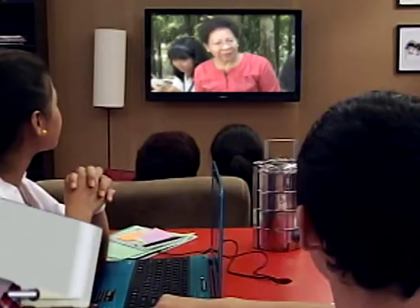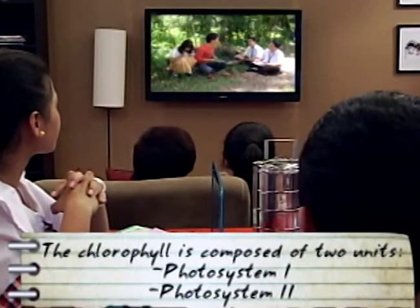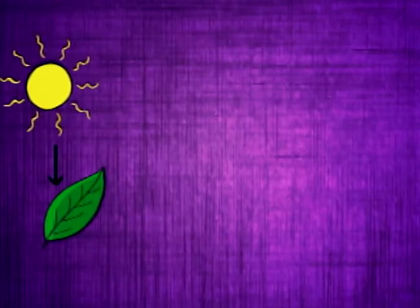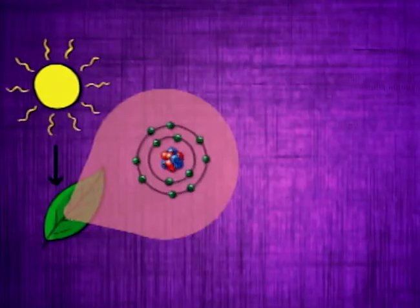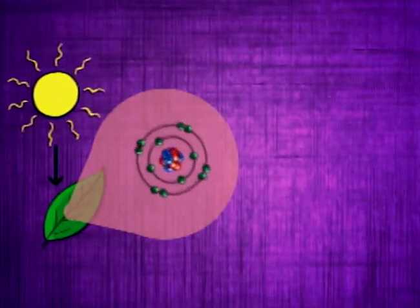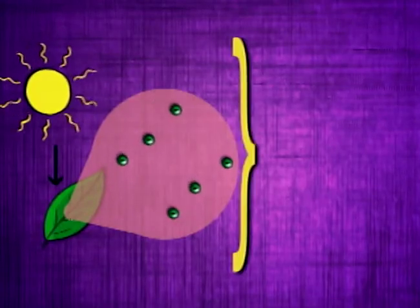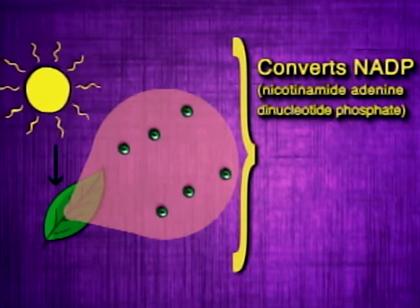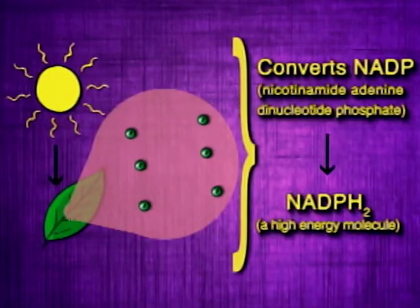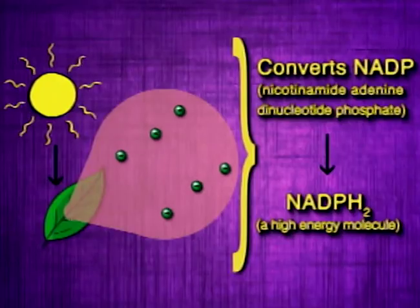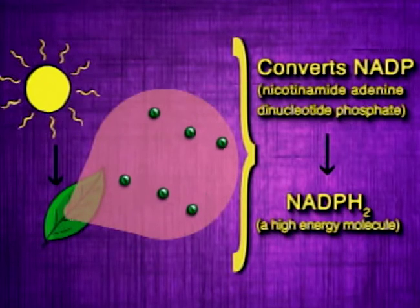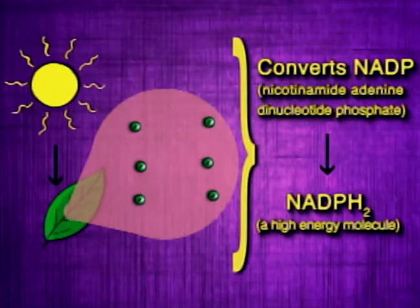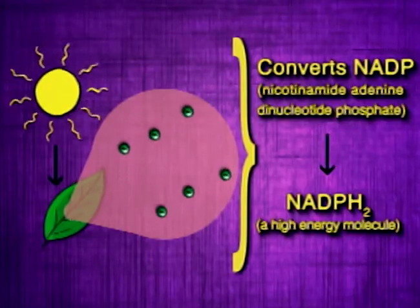The chlorophyll is composed of two units, photosystem-1 and photosystem-2. When a photosystem-1 chlorophyll absorbs light, its electrons get excited and are released. These electrons are passed through an electron transport chain to convert NADP, or nicotinamide adenine dinucleotide phosphate, to NADPH2, a high-energy molecule.